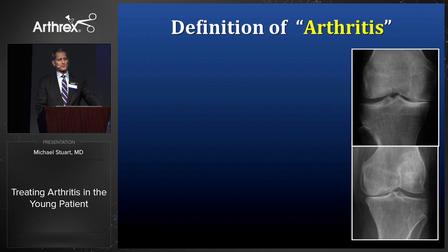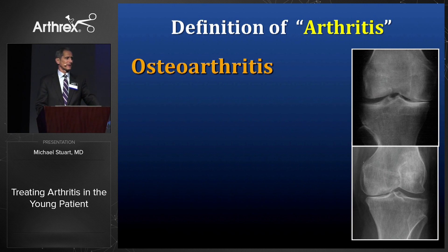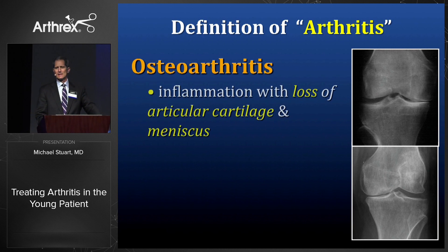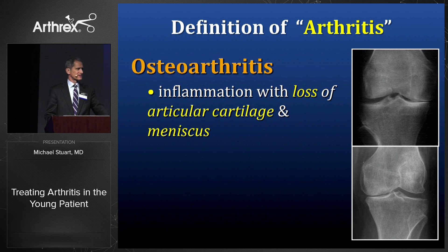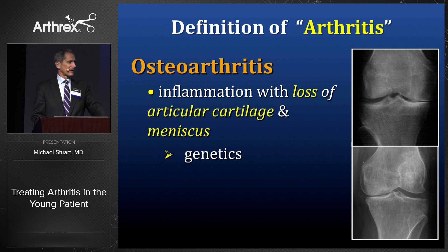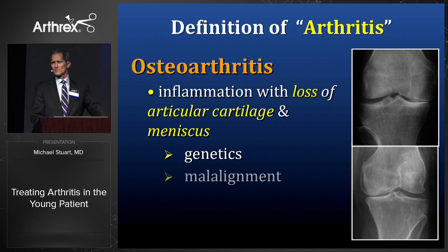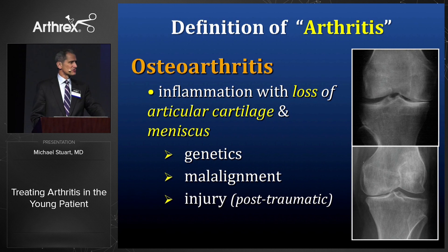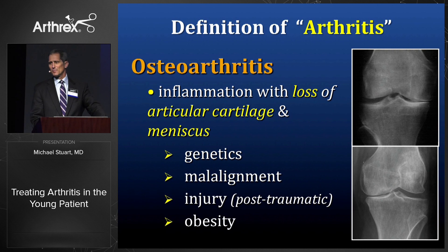This is a nebulous and controversial topic. How do we define arthritis? How do we define a young patient? For the purpose of this presentation, we're talking about osteoarthritis and post-traumatic degenerative arthritis. Arthritis means inflammation of a joint — loss of articular cartilage and meniscus. Every severely arthritic knee has a meniscus tear. It's affected by genetic predisposition, malalignment, injury damaging subchondral bone, articular cartilage, menisci, and ligaments. Obesity has also been proven to be a risk factor.